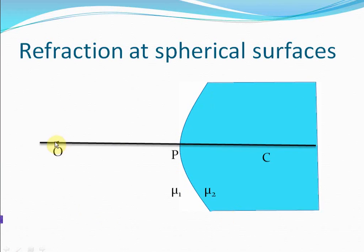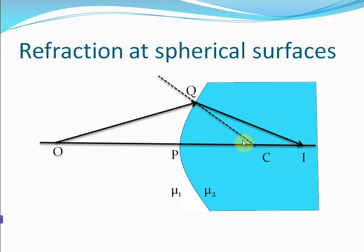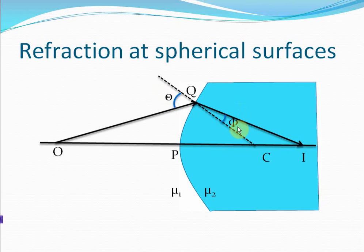Let's say this is an object here which is emitting a ray that is striking the spherical surface and forming an image right here. This is the normal at the point of contact, and as you see, this normal at the point of contact passes through the center of curvature of the spherical surface. This is angle theta, the angle of incidence, and this is angle phi, the angle of refraction.